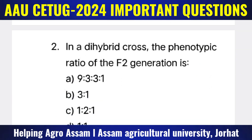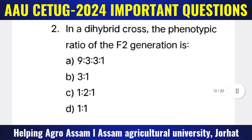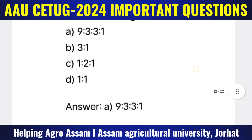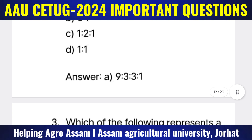Question 2: In a dihybrid cross, the phenotypic ratio of the F2 generation is — Options: (A) 9:3:3:1, (B) 3:1, (C) 1:2:1, (D) 1:1.